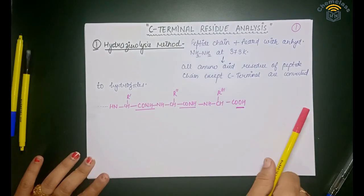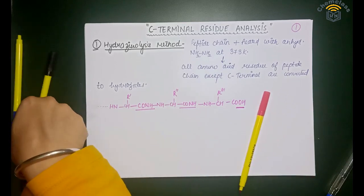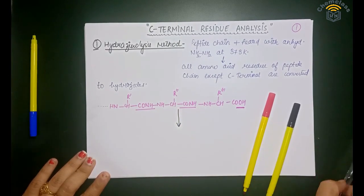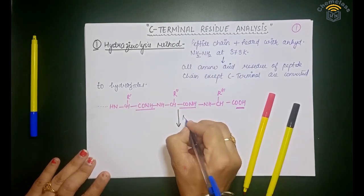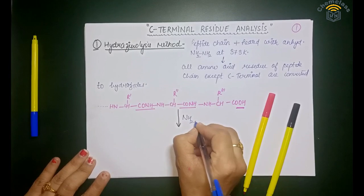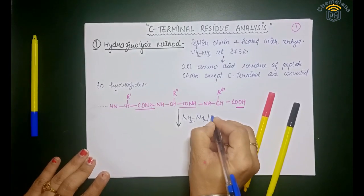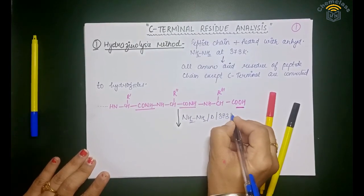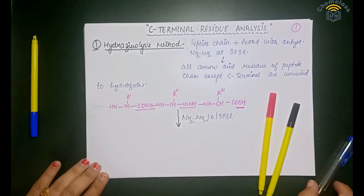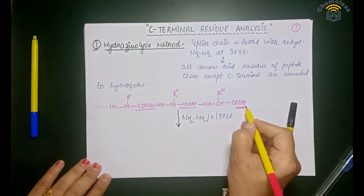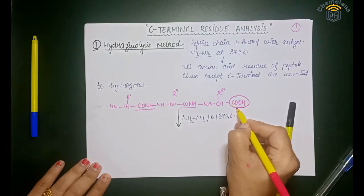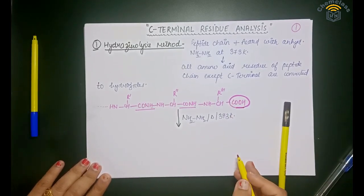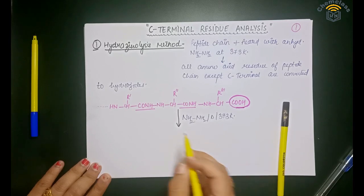This end with COOH is the C-terminal. You treat this chain with hydrazine and heat it at 373 Kelvin. When you heat it, all peptide bonds break except the free C-terminal which carries the COOH group.